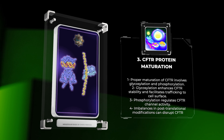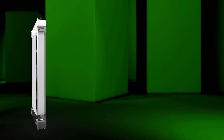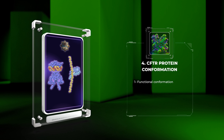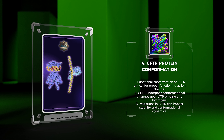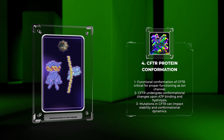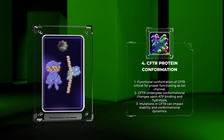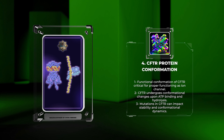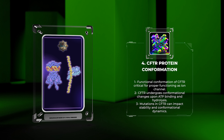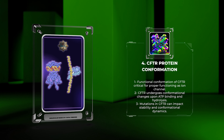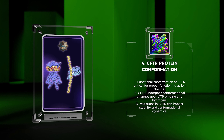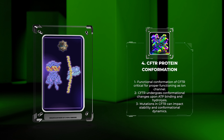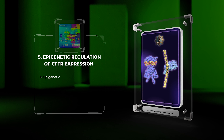The functional conformation of CFTR is critical for its proper functioning as an anion channel. The protein undergoes conformational changes upon ATP binding and hydrolysis, which drive channel opening and closure. Mutations in CFTR can impact the stability and conformational dynamics of the protein, resulting in aberrant ion transport across epithelial cells.